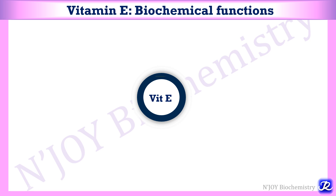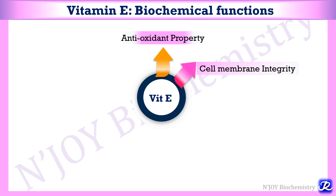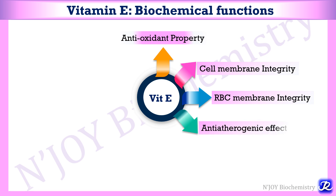Now let us see the various biochemical functions of vitamin E. Vitamin E is the most potent biological antioxidant — it is a chain-breaking and cell membrane antioxidant. Many of its functions are due to its natural antioxidant property. For example, it maintains cell membrane integrity and RBC membrane integrity, and it prevents hemolysis of RBCs by free radicals like hydrogen peroxide. It has an anti-atherogenic effect — it prevents the formation of oxidized LDL, which has a role in atherosclerosis.